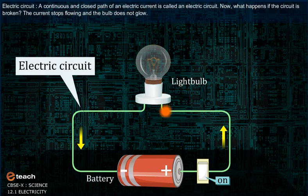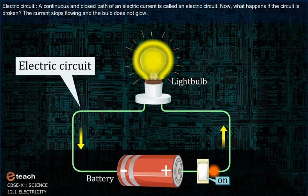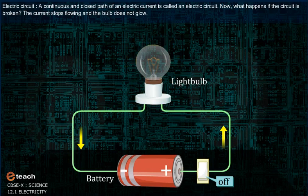Electric circuit. A continuous and closed path of an electric current is called an electric circuit. Now, what happens if the circuit is broken? The current stops flowing and the bulb does not glow.